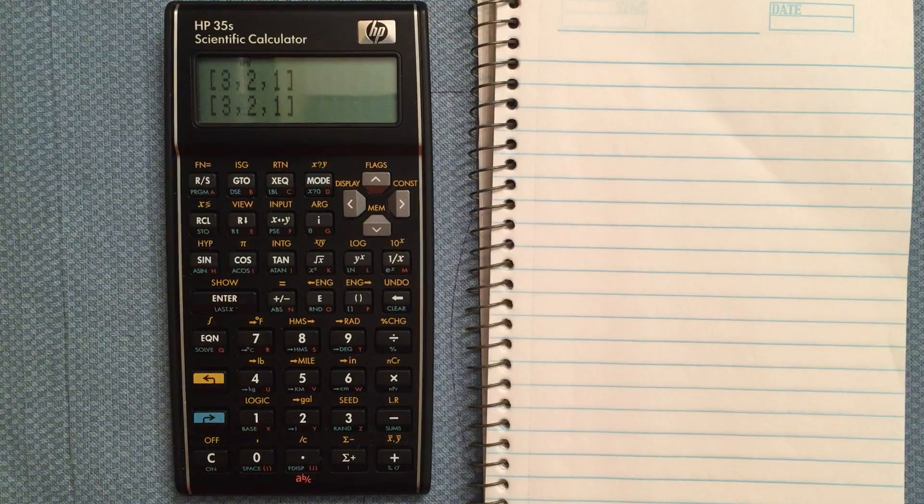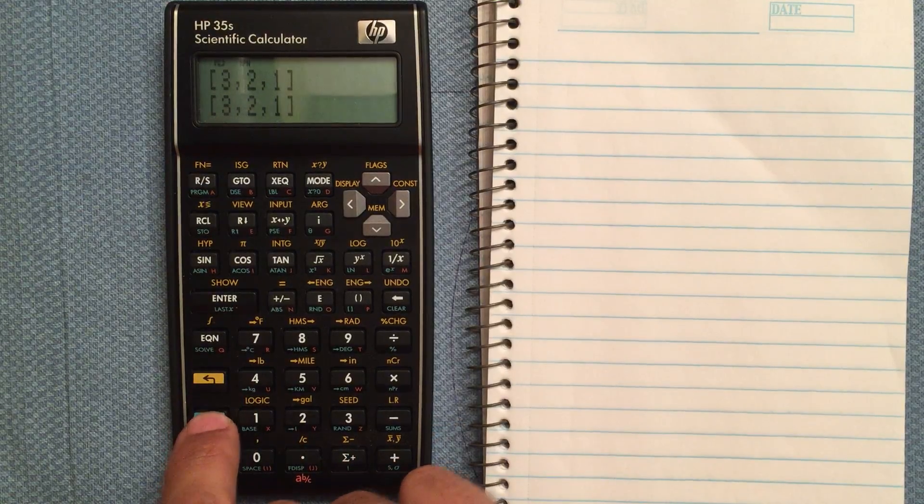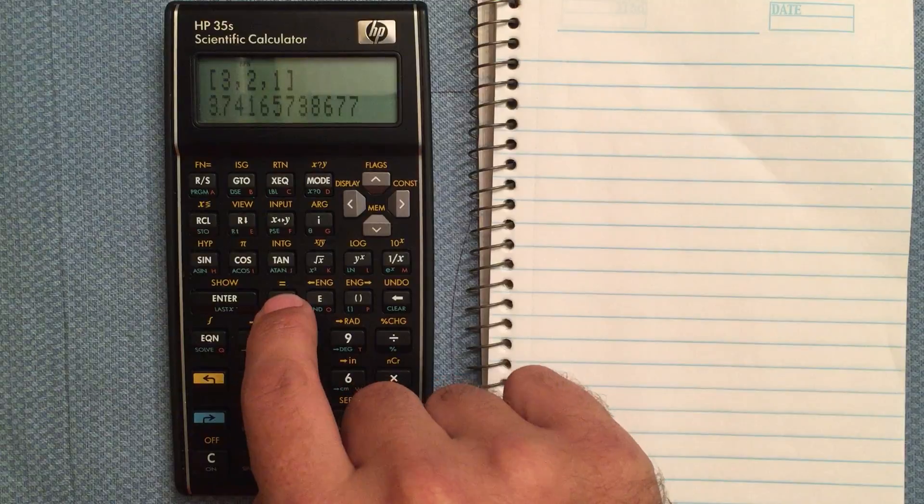If I want to find the magnitude of that vector, I can just do blue shift and then absolute, and that gives me the magnitude.